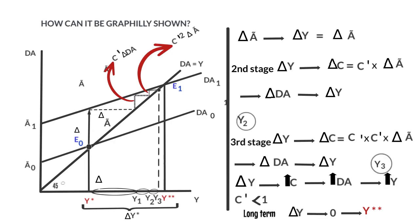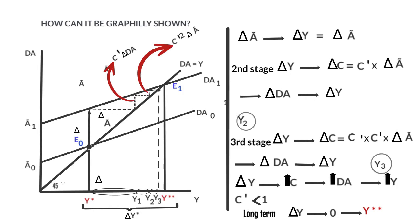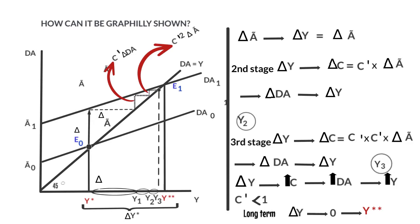Finally, the total increase in income is higher than the initial increase observed in aggregated demand, due to the fact that in the different stages there has been a progressive increase in income, though these increases have decreased.